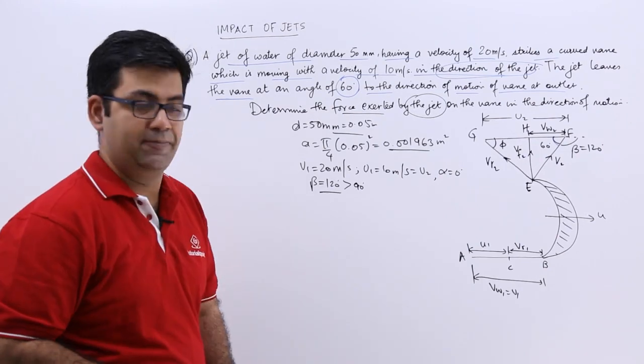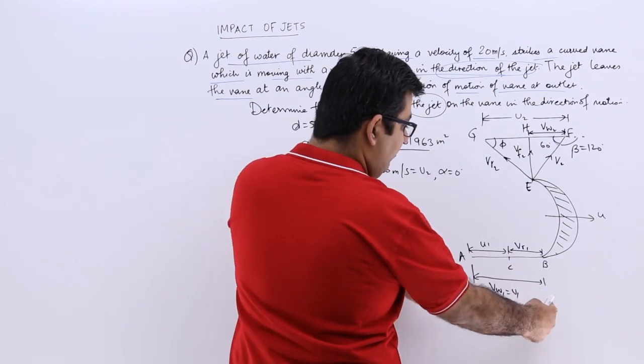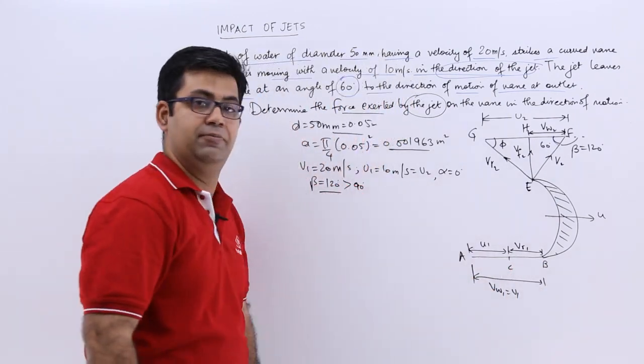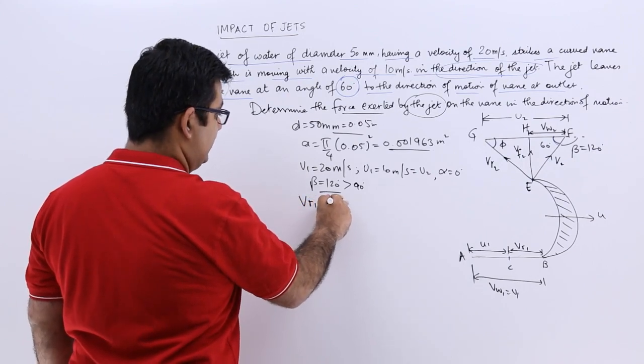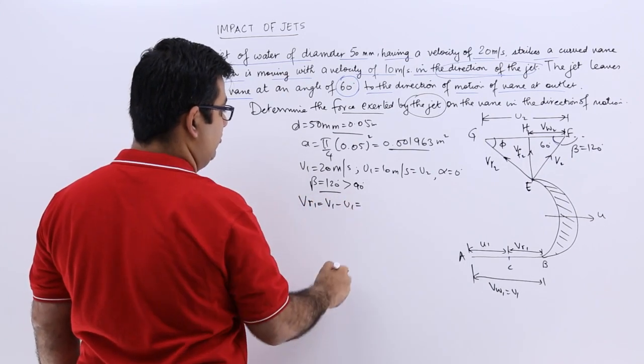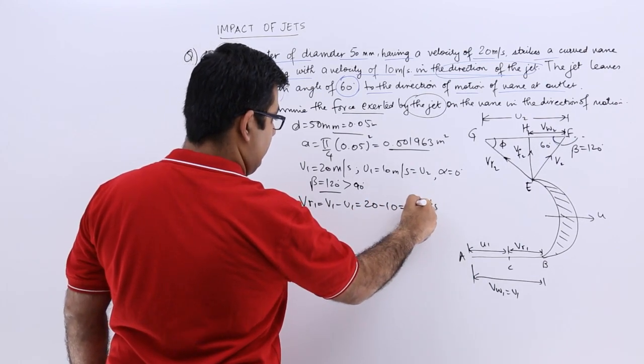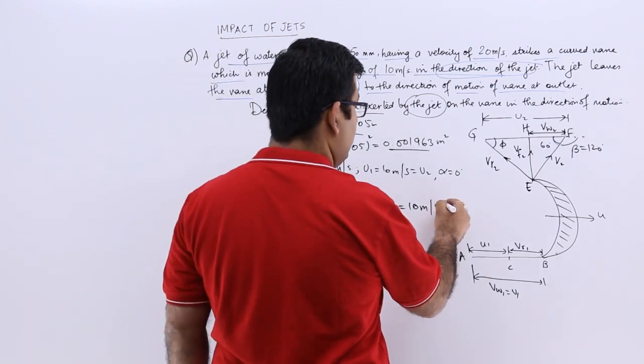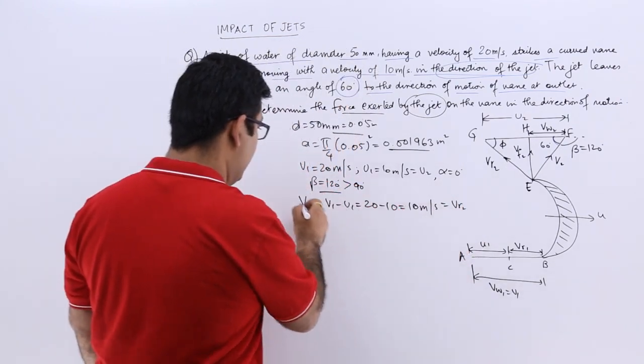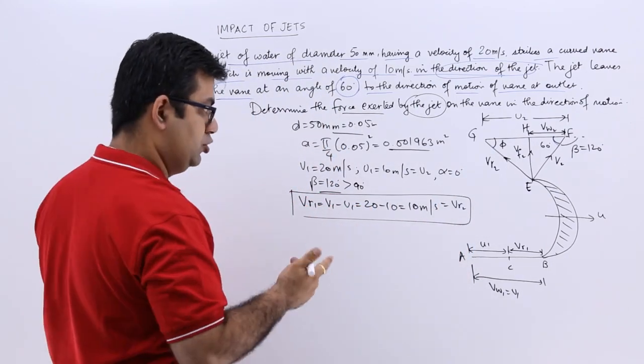And the force has to be found out. So let us find out vr1 first. So vr1 is equal to v1 minus u1. So vr1 is v1 minus u1, so v1 is 20 minus 10 gives you 10. So your vr1 is 10. Similarly, it will be equal to vr2. So vr2 and vr1 are same because there is no loss, there is no shock involved.